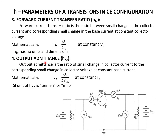The fourth parameter is the output admittance HOE. This is the ratio between small change in output current to small change in output voltage. Since this is current divided by voltage, it is admittance — the reciprocal of impedance. The unit of impedance is ohm, so the reciprocal gives the unit of mho (siemens). Thus, HI, HR, HF, and HO are the transistor hybrid parameters.